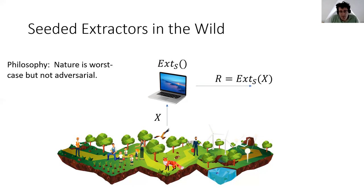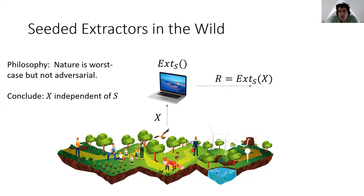The philosophy here is that nature is worst-case but not adversarial. So even though we don't know the distribution that the sample x comes from — we just assume it has entropy — we can assume this distribution is independent of the seed s. Even though s is public, because nature is not adversarial, it's not trying to choose the worst-case x depending on s, so we can assume that x is independent of s.